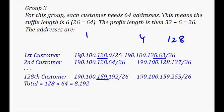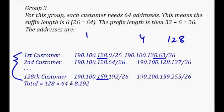We have successfully designed the network with three different types of groups, each with different numbers of customers and address sizes. We've used contiguous allocation from 190.100.0.0 through 190.100.159.255, and there are still many addresses left in the original /16 block.